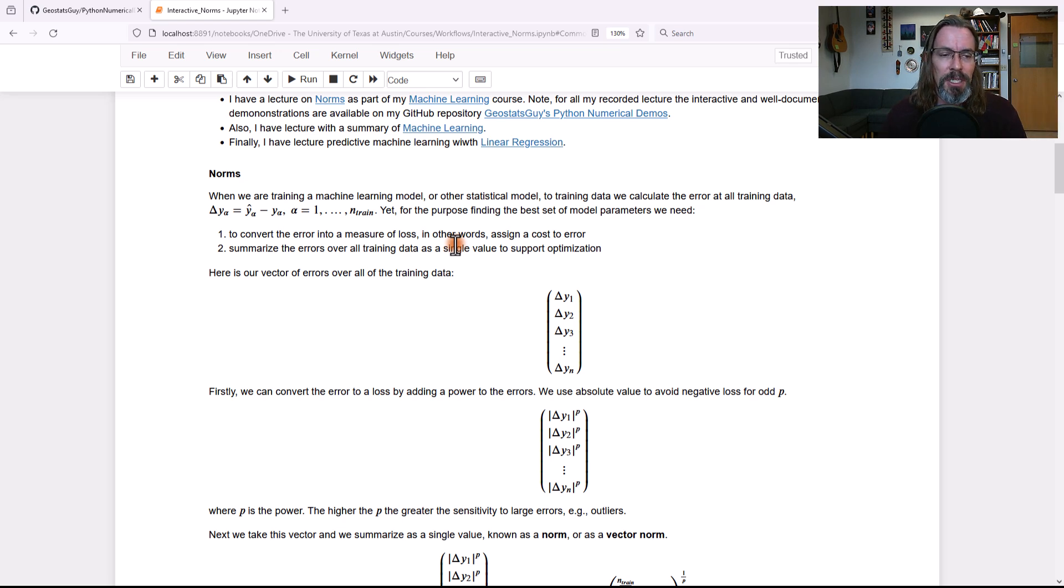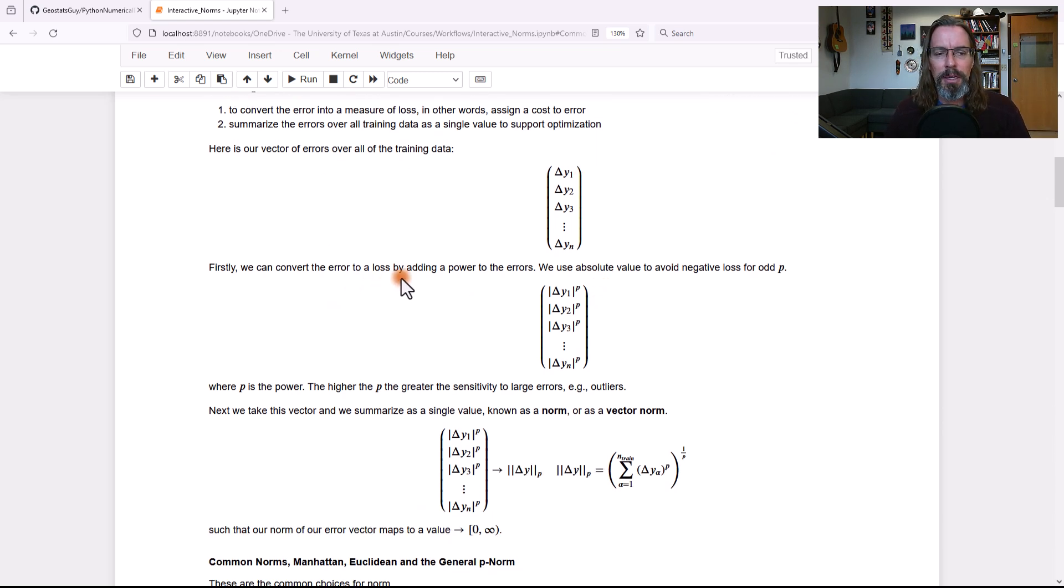Okay, so that's the concept of norms. Here's our initial vector right here with all of our data. One through n, we have our errors or our deltas. I like using delta notation. You could use other types of notation, of course. First, we've got to go ahead and convert it to a loss. And a way we could do that is we'll take the absolute value, this symbol right here with the vertical lines, absolute value, and we'll raise it to a power.